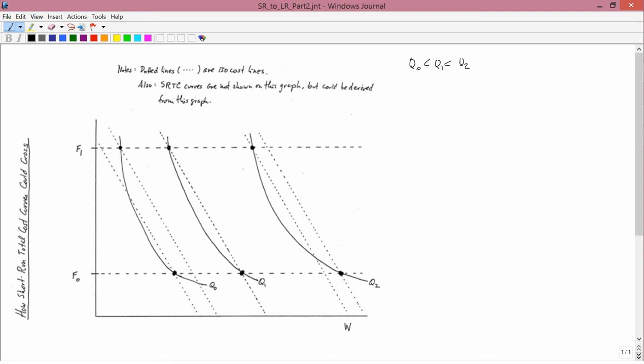Similarly, as we've indicated, F0 is less than F1. And we want to talk about the cost of producing Q0 bushels or Q1 bushels or Q2 bushels when you have a choice of either F0 or F1 pounds of fertilizer, but you don't have any other choice of fertilizers.